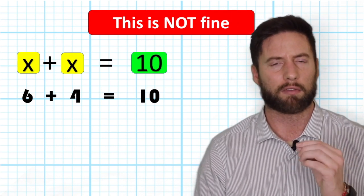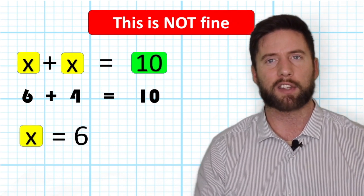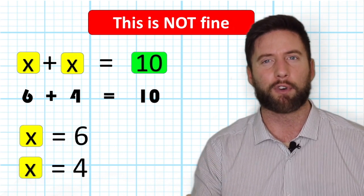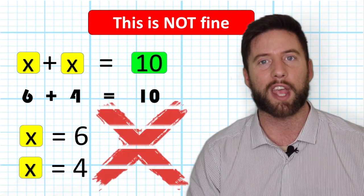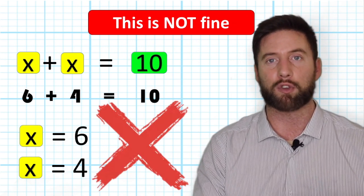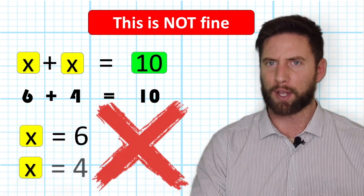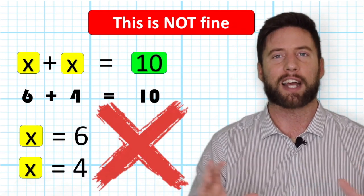That means the first X would be 6 and the second X would be 4. This is not okay. This means that different Xs would have different values through an equation, which would become very problematic.